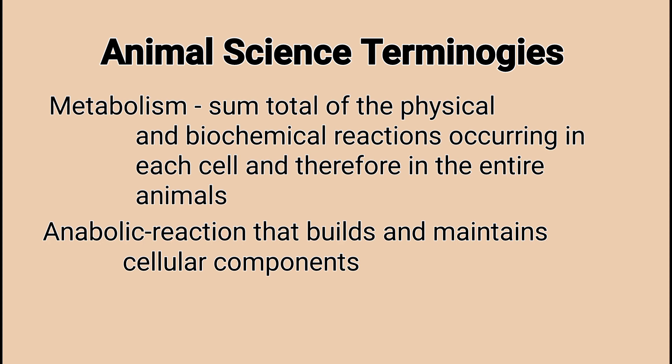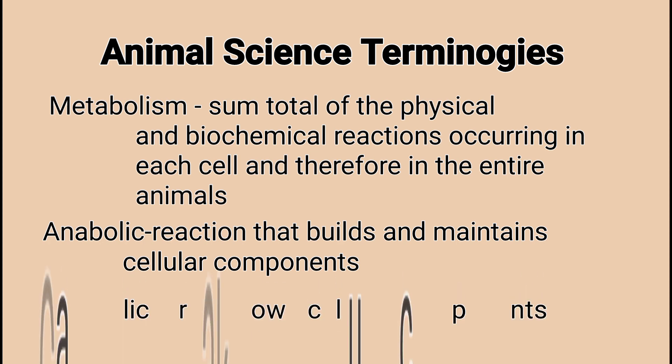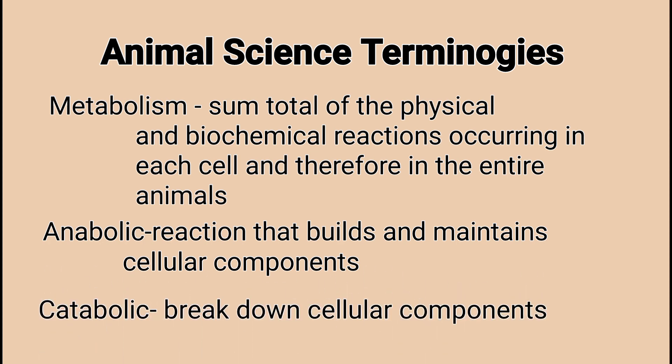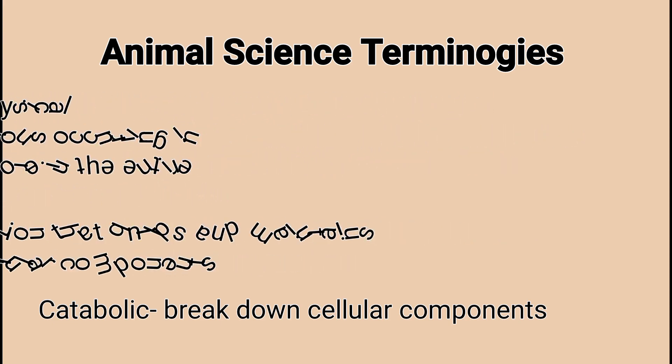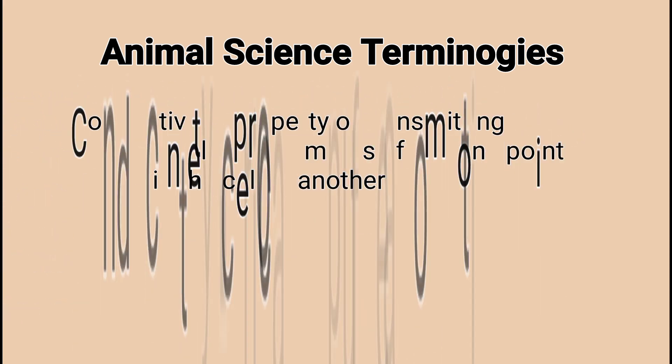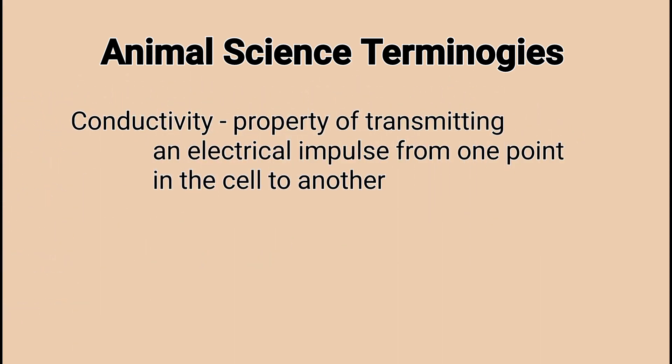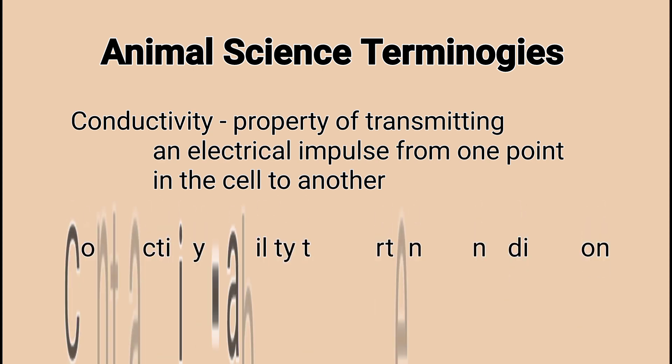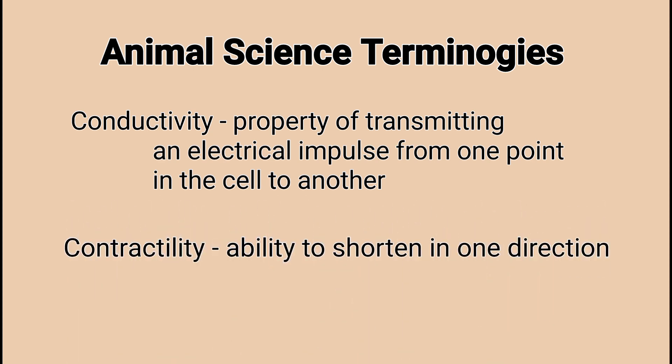Anabolic: a reaction that builds and maintains cellular components. Catabolic: a breakdown of cellular components. Conductivity: property of transmitting an electrical impulse from one point in the cell to another. Contractility: ability to shorten in one direction.